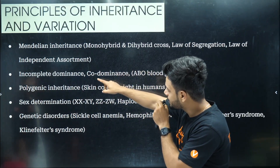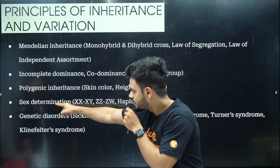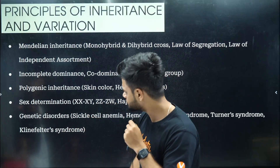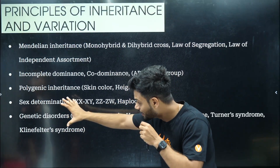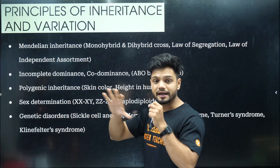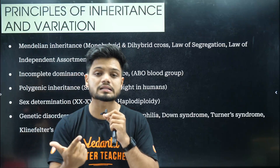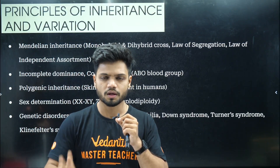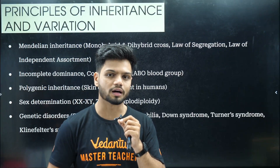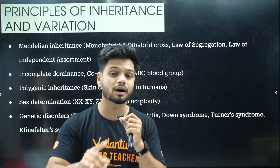They can also ask you polygenic inheritance — two-mark question. Co-dominance, incomplete dominance, heteroploid — all that is two-mark question. Disorders — I cannot stress enough. Especially Down syndrome, Turner syndrome, Klinefelter syndrome. These chromosomal disorders can come as one-mark, three-mark, or five-mark questions.